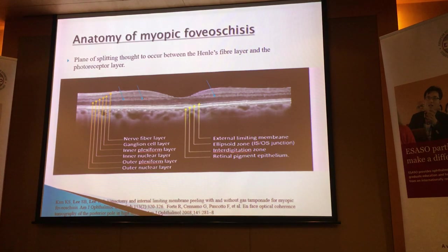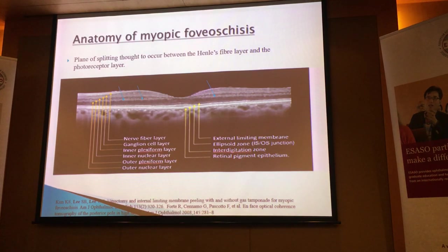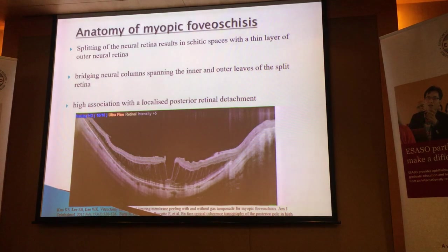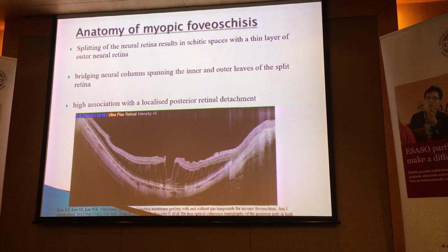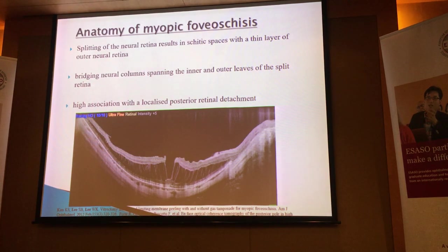This is the anatomy of myopic schisis — the classic definition. It's basically the splitting of the plane within the retina itself at the macula, usually and classically described as between the Henle fiber layer and the photoreceptor layer — that's where the blue arrows are pointing. In these changes, you'll also see that the neural retina actually splits up into two different layers: a thinner outer retinal layer and a much thicker inner retinal layer. In between, bridging these two layers, you get what we call neural columns that connect them together.